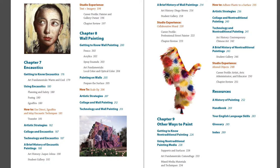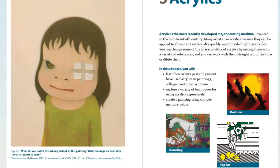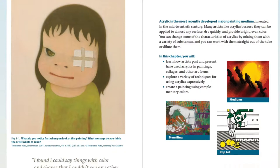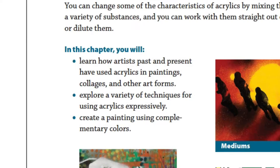Now let's take a closer look at a complete chapter. We'll use Chapter 5, Acrylics. The first two pages of every chapter offer students an inspiring overview of what's ahead. The left page includes a thought-provoking work of art with a caption that asks students to think deeply about what they see. A quotation from an artist offers another idea to consider. The right page includes a list of key terms covered and defined in the chapter, a brief introduction, and short list of chapter concepts.